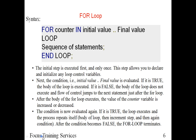Here are some steps. The initial step is executed first and only once. This step allows you to declare and initialize any loop control variable. When you initialize this variable and it is executed first, this variable — which is a counter — is automatically initialized. No need to initialize manually.